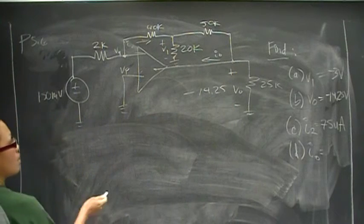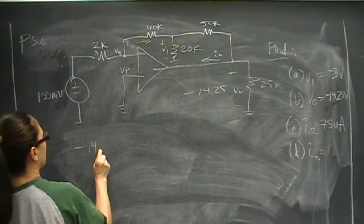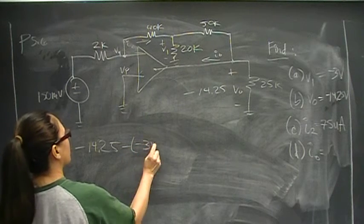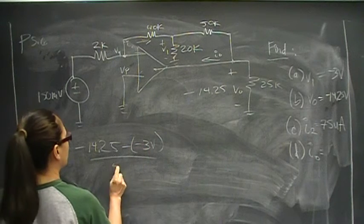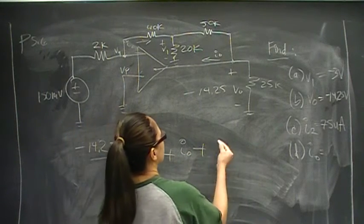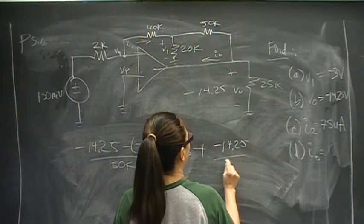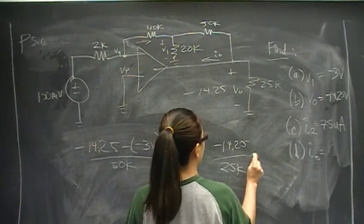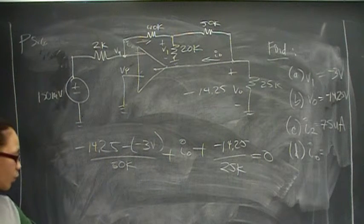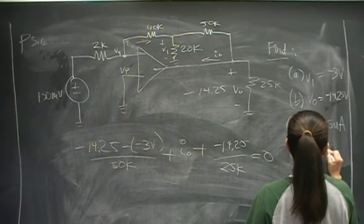So we know what Vout is, so negative 14.25 minus V1, which is negative 3 volts, over 50K plus I0 plus negative 14.25 over 25K equals zero. We have one equation and one unknown. Solving for I0 will give you 795 microamps.